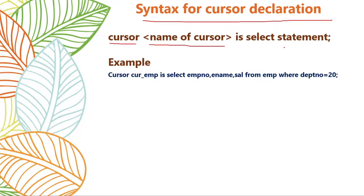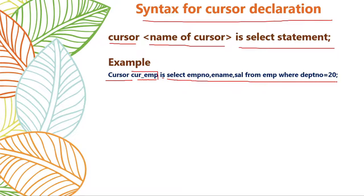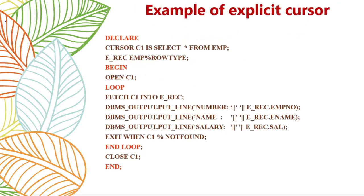The syntax for cursor declaration: use keyword CURSOR, then write the name of the cursor, then write a valid SELECT statement. For example: CURSOR curr_emp IS SELECT emp_number, ename, sal FROM emp WHERE department_number = 20. This means inside the cursor you will have employee number, employee name, and salary for all records belonging to department 20. Whatever data you want to process, you write a query for that — that is called declaration of the cursor.